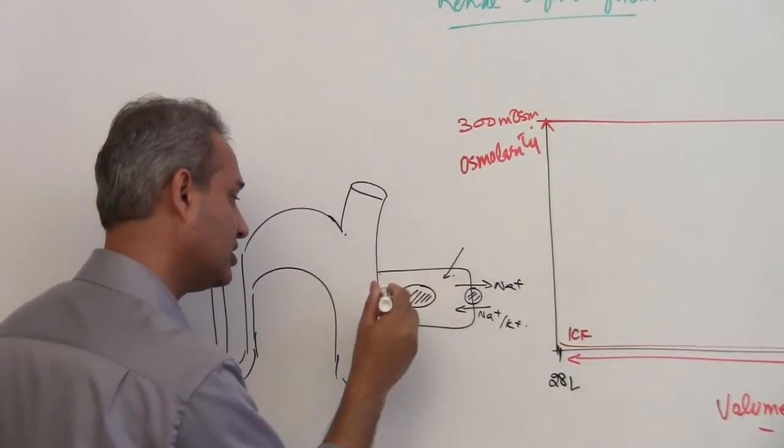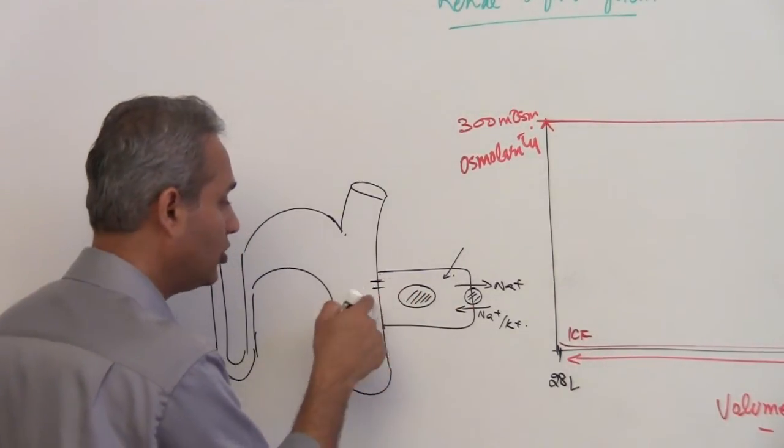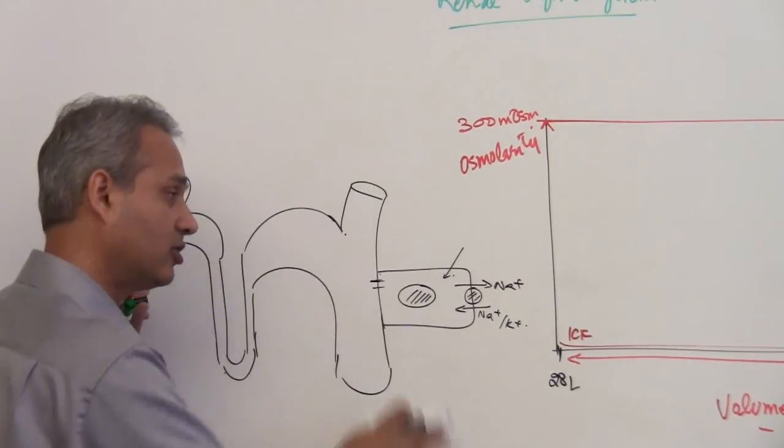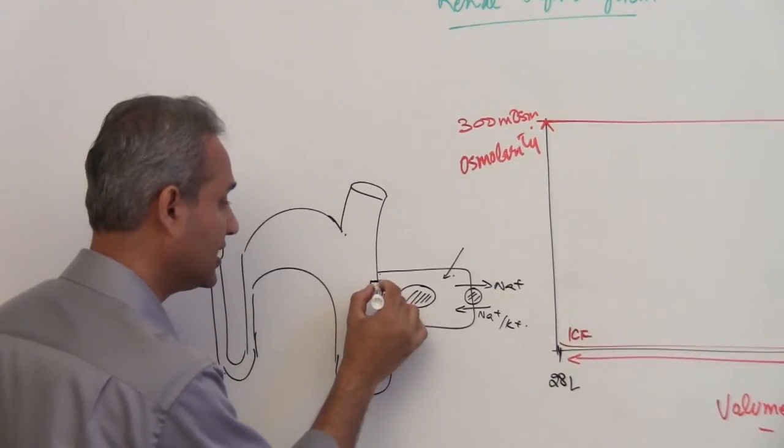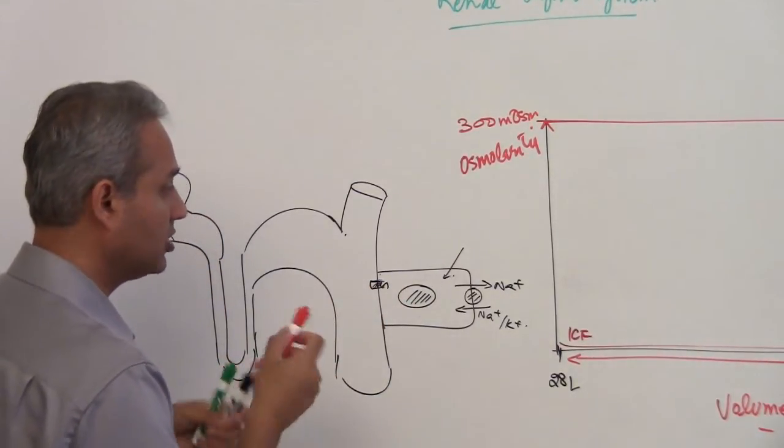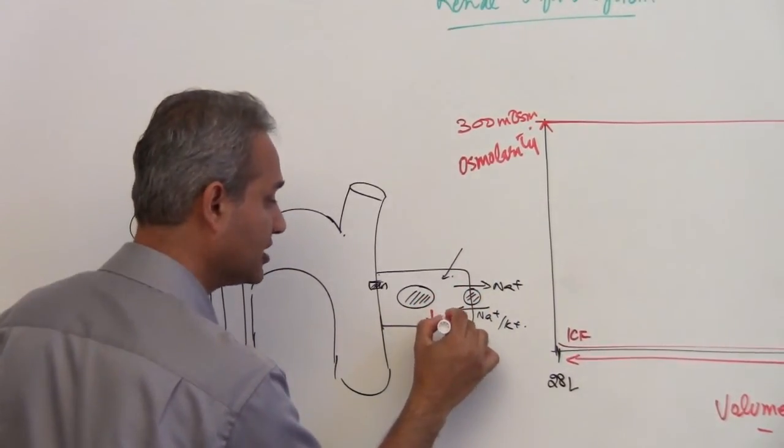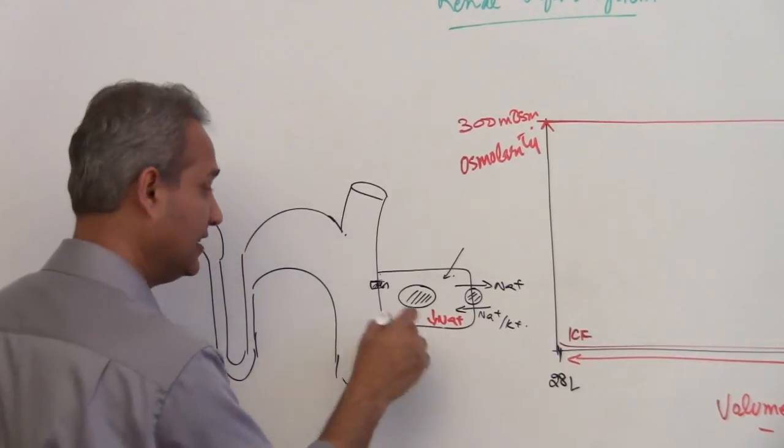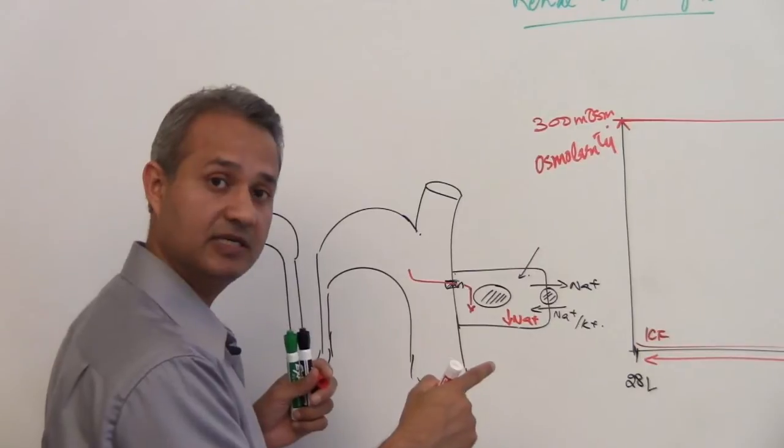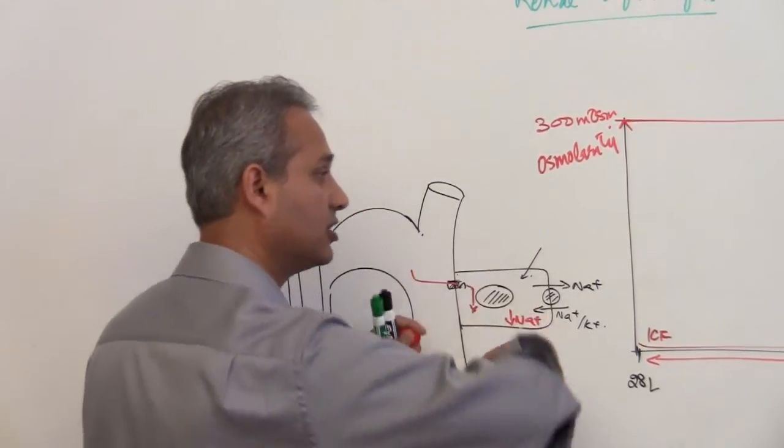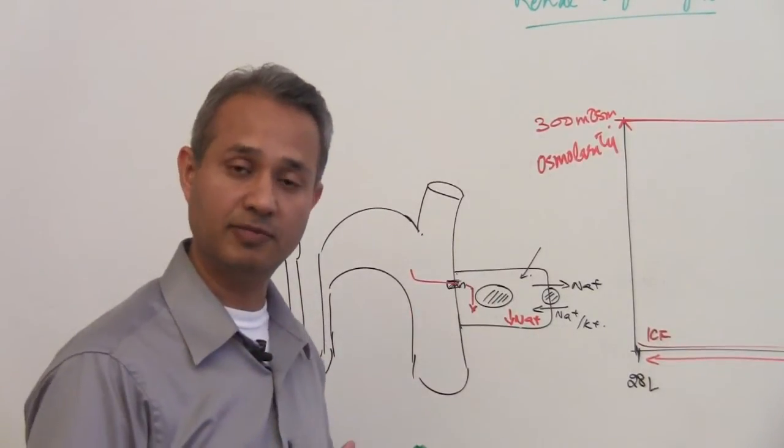It also causes - the aldosterone also causes increased manufacturing of sodium channels on the apical side. Again, I know we have not talked about the nephron, so we will talk about it, but there are sodium channels present here. So what would happen is that more sodium will be taken out of the cell, that would reduce the sodium concentration inside the cell, that in turn would cause the sodium to be moved in from the urinary space. This sodium which is now coming from the urine is going to be picked back up into the blood, and that is how the level of sodium can increase.